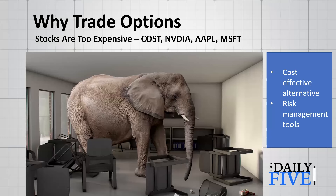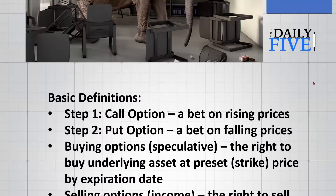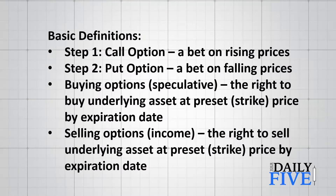Let's talk about the elephant in the room — why do we want to trade options, especially in this type of market? The truth is that stocks are too expensive. You have stocks like Costco trading near $600, Nvidia $580-$590, Apple, Microsoft — they're just outrageously expensive. So options are a cost-effective alternative as well as being a risk management tool.